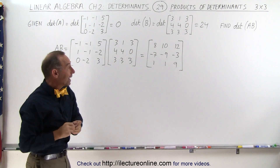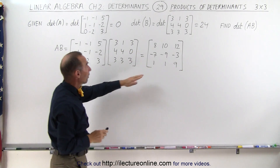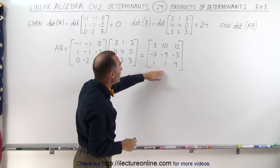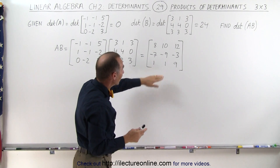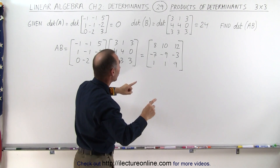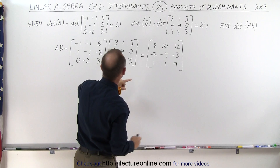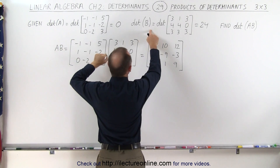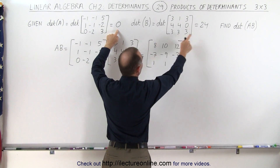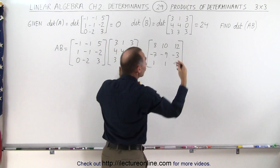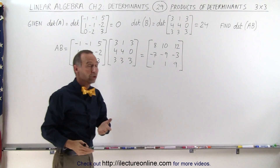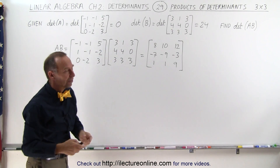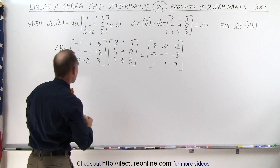Now we're going to take the determinant of this product matrix A times B, and it should equal the product of the determinant of A times the determinant of B, which would be 0 times 24, or 0. So the determinant of this matrix should equal 0. Let's see if that's true.